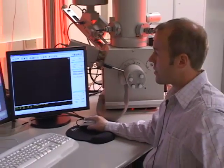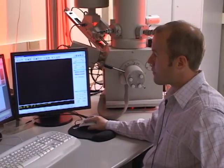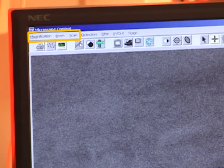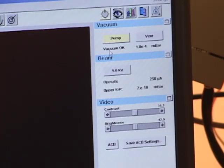Most of the software that we're going to use today is located in the first three tabs: magnification, beam, and scan. And also the four sub-menus on the right are the blue bars: vacuum, beam, video, and stage.